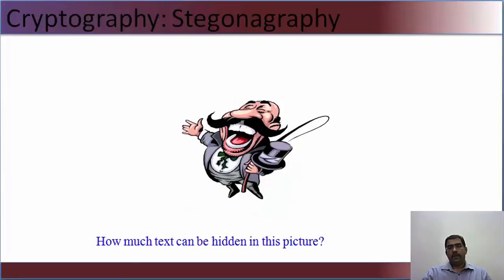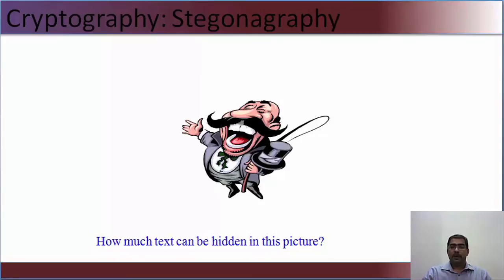Then comes steganography — how much text can be hidden in a picture. A lot of text can be hidden in pictures; there are methods and binder software available for doing that. A lot of text can be hidden within a picture and then transmitted. The receiver will know where the text is or how to retrieve it because that information is pre-shared. It is possible to insert messages into a picture and transfer them.